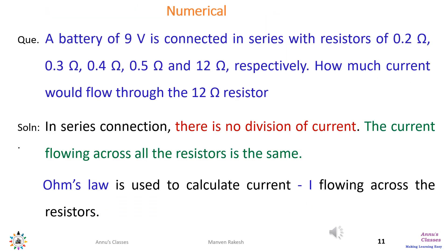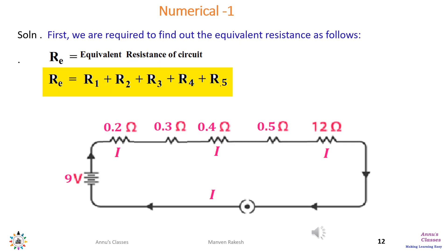Let us check how much we have learned by solving a numerical. The problem: a battery of 9 volts is connected in series with resistors of 0.2 ohms, 0.3 ohms, 0.4 ohms, 0.5 ohms, and 12 ohms respectively. How much current would flow through the 12 ohm resistor? We simply apply the series resistance formula and Ohm's law.